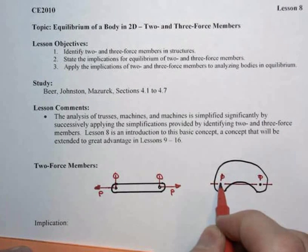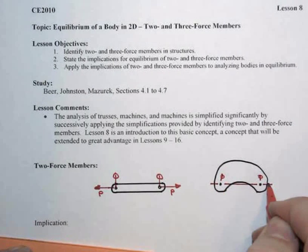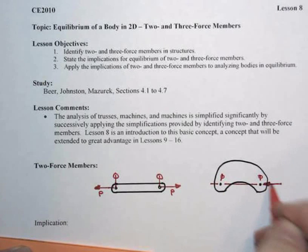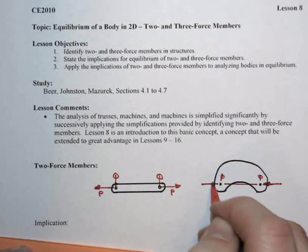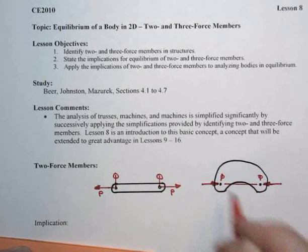Again, when I sum moments about one end, I've got no choice. They have to go to zero. I'm going to show this one as though the body is in slight compression. But no, it doesn't have to be a straight member.